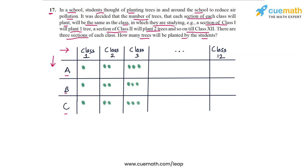This means that every class, we can now calculate the amount of trees planted by every class, all the sections put together. So class 1, all the sections put together will plant three trees. Class 2, all the sections put together will plant six trees. Class 3, all the sections put together will plant nine trees, and so on, all the way up to class 12, which will plant a total of 36 trees.